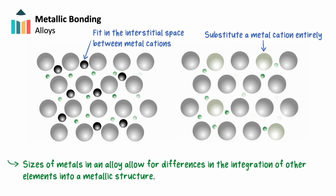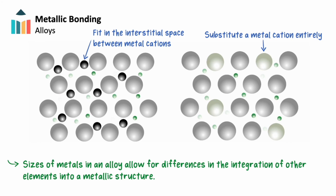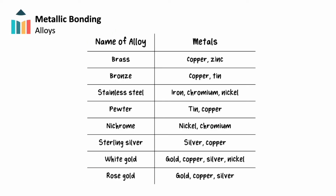The delocalized electrons within these alloys are still free to move, but depending on the metallic elements and their relative composition within the alloy, properties change and can be improved. Bronze, brass, steel, pewter, nichrome, sterling silver, and the varieties of gold such as white and rose are all examples of useful alloys.